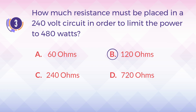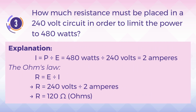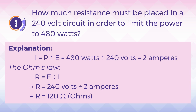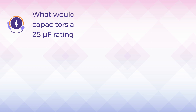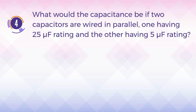The correct answer is B) 120 ohms. Explanation: 480 watts divided by 240 volts will equal 2 amps. Therefore Ohm's Law will apply — the formula voltage divided by amps equals resistance, or 240 divided by 2 equals 120 ohms.